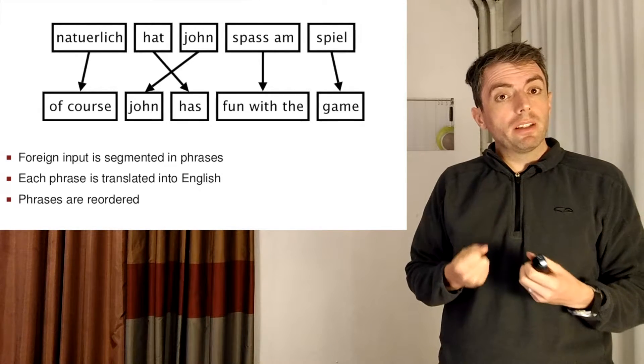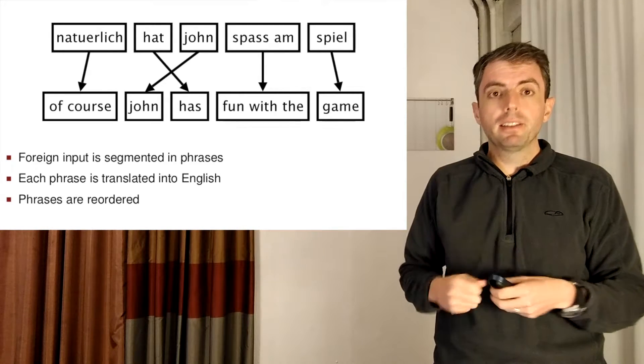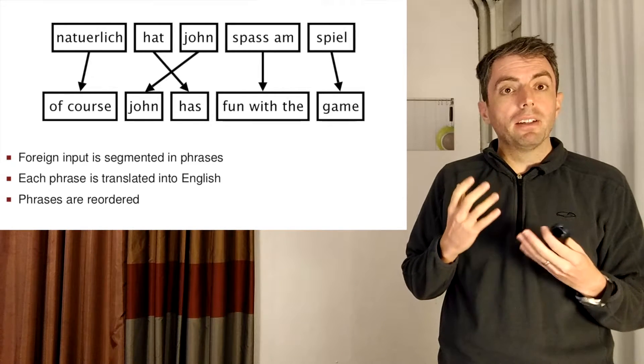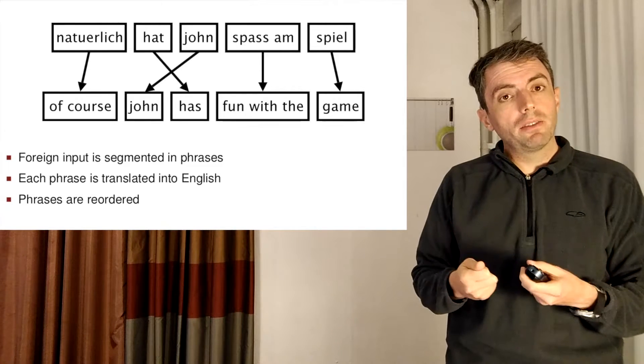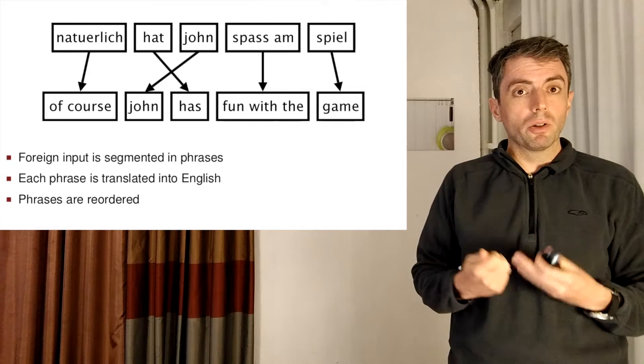And we also see that the phrases can be reordered. So for example, John and has flipped their positions. And these are the two things that happen in a phrase-based translation model. You translate phrases by themselves and you reorder the resulting phrases in your target language.